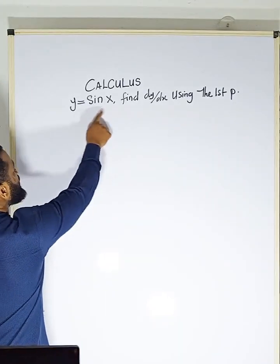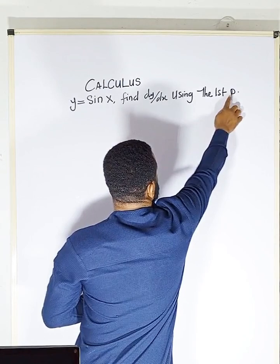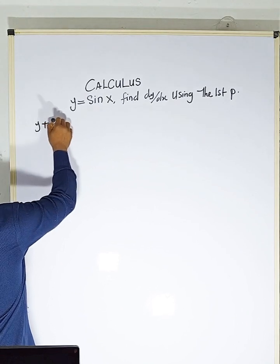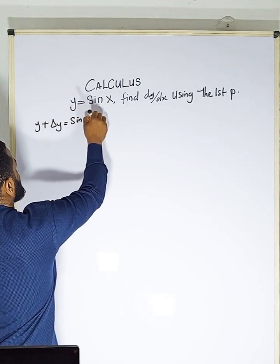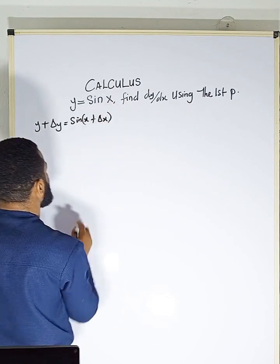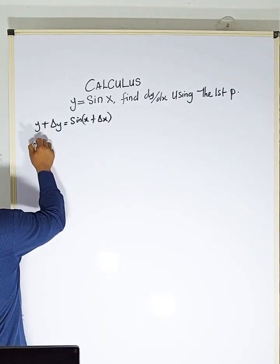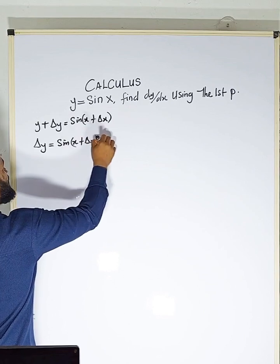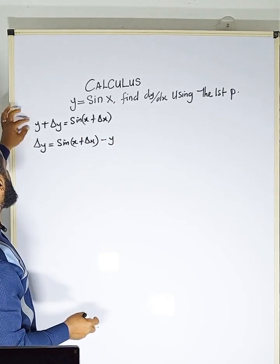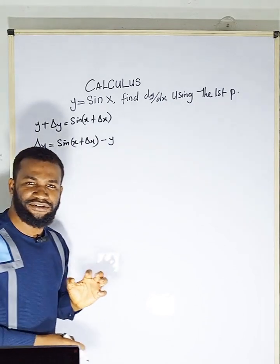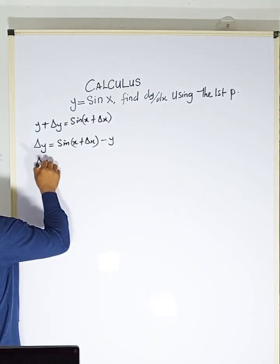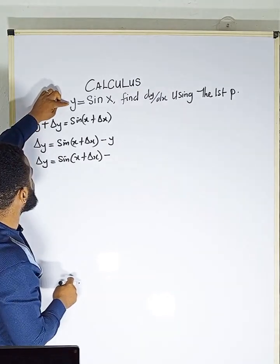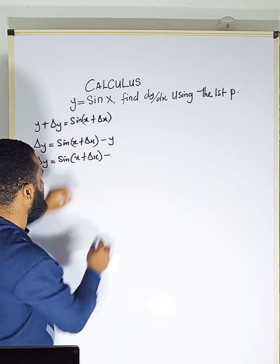If you are asked to do this using the first principle, let's go. I'm going to start with y plus δy equals sine of (x plus δx). That's the first step. After that I'll make δy the subject: δy equals sine(x + δx) minus y. I subtract y from both sides of the equation, so δy equals sine(x + δx) minus sine x, because y is sine x.